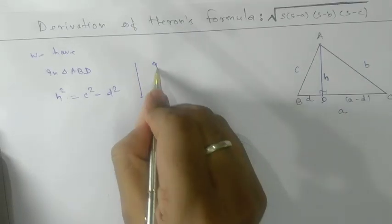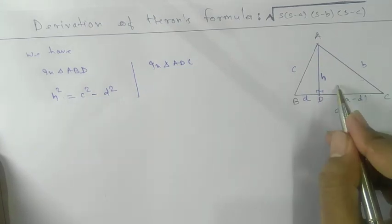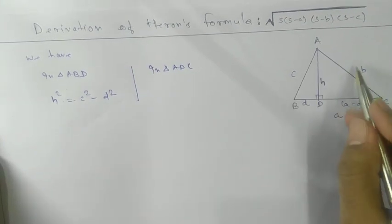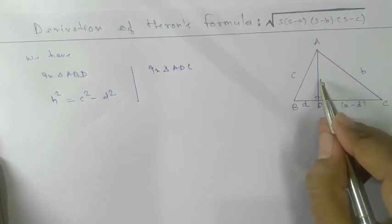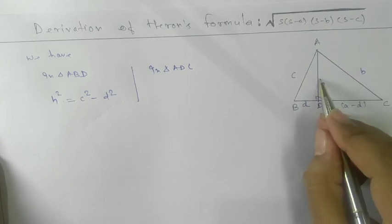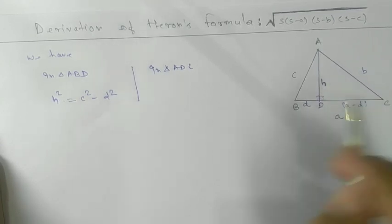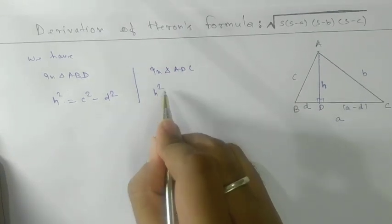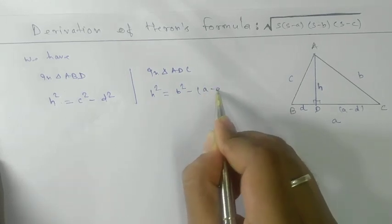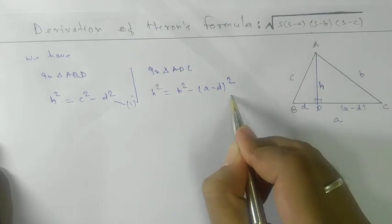For triangle ADC, which is also a right-angle triangle, by Pythagoras theorem: hypotenuse² = perpendicular² + base². So perpendicular² = hypotenuse² − base², giving us H² = B² − (A − D)². This is equation two.